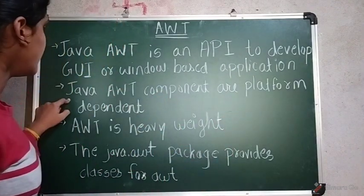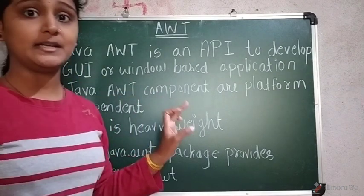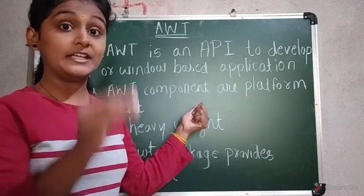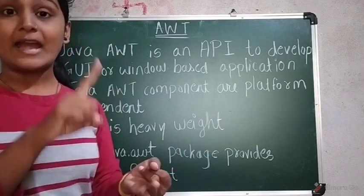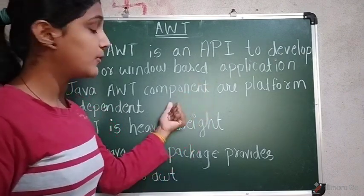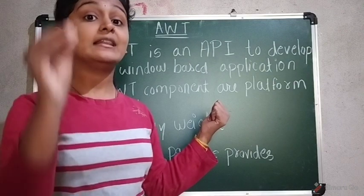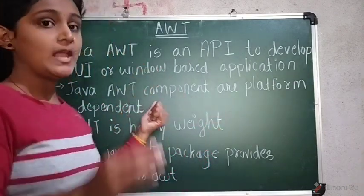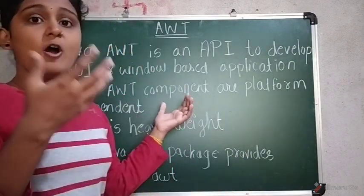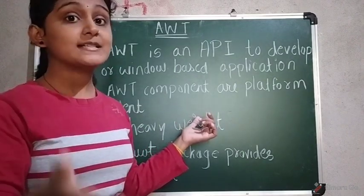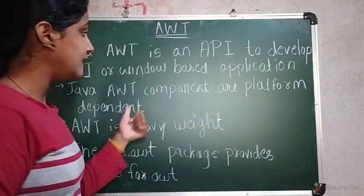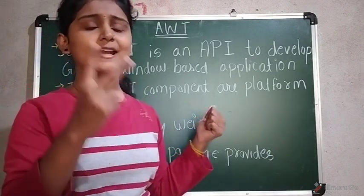The next point is that Java AWT components are platform dependent. This is very important. The components — such as button, text field, and label — are the controls, and they are nothing but the classes of AWT. As mentioned in the previous video, AWT contains a number of classes and methods. These controls and components come under AWT, and they are platform dependent.